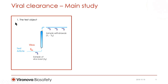In the main study, the process steps, or test objects, are analyzed one by one. The test article, which is a representative sample from the manufacturing process, is spiked with a selected virus, already mixed, and then the sample is withdrawn. The virus-spiked test article is then run through the downscale model of the process, and optional samples are withdrawn. In the case of chromatography, the sampling should include product-containing fractions, flow-through, washes, and more.